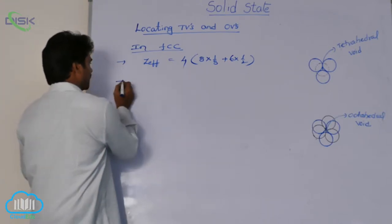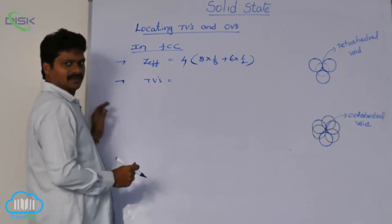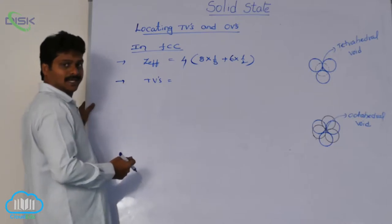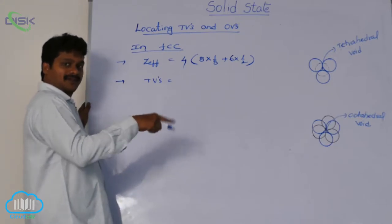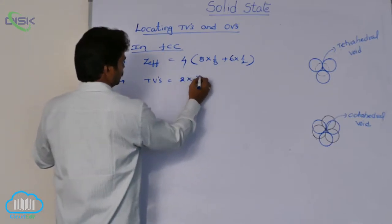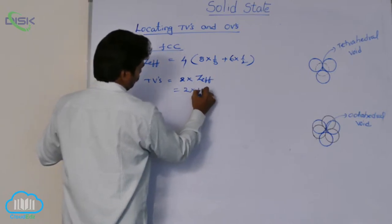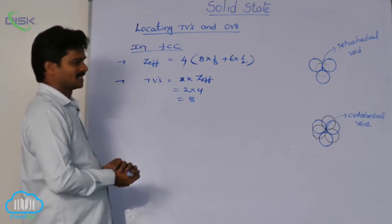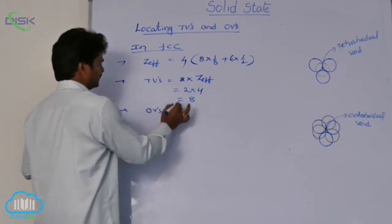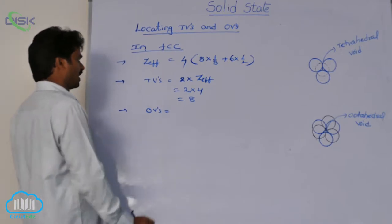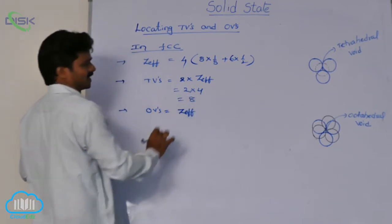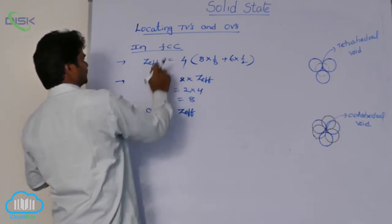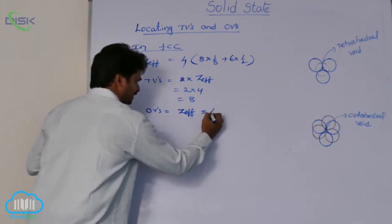The number of tetrahedral voids equals 2 times the number of effective atoms. So 2 × 4 = 8 tetrahedral voids. Similarly, octahedral voids equal the number of effective atoms, which is 4. So there are 4 octahedral voids in FCC.